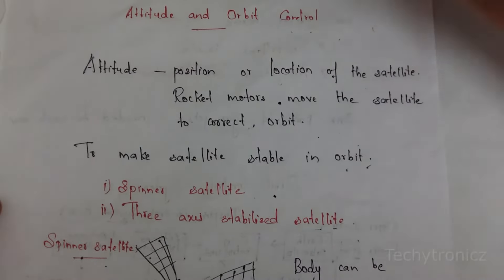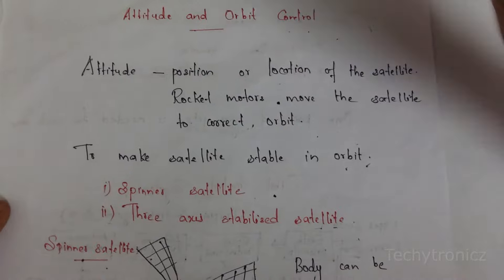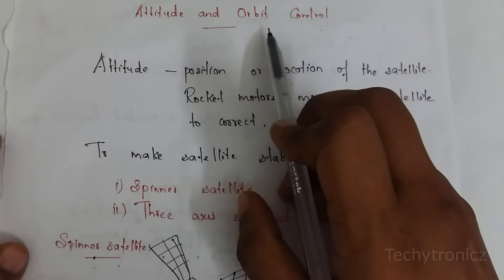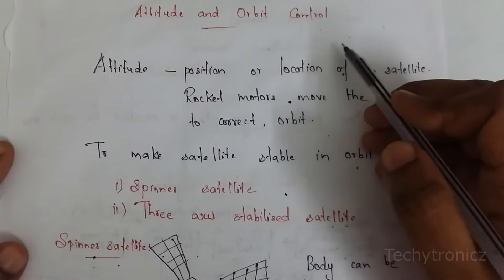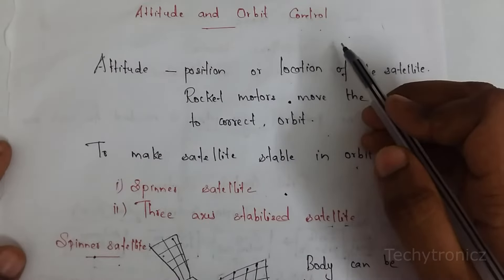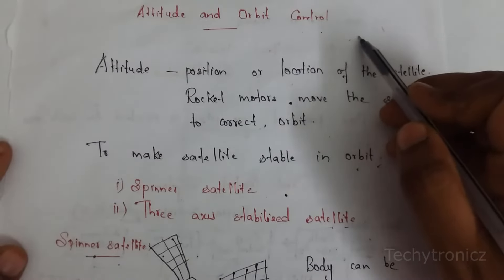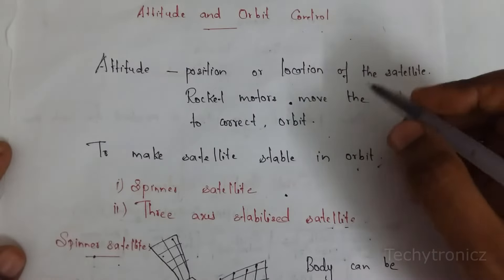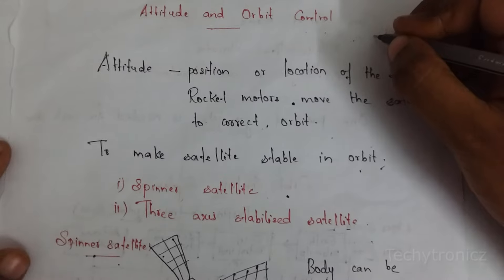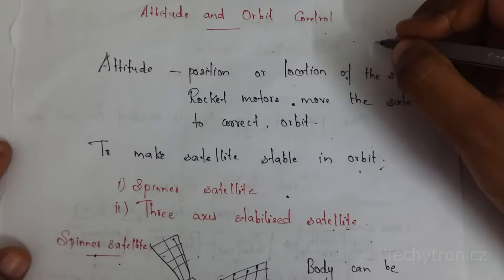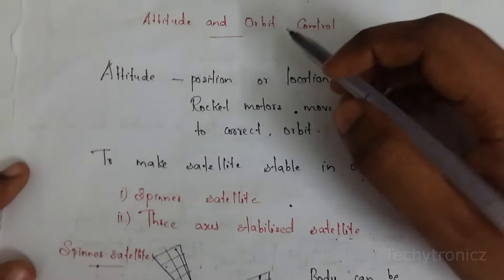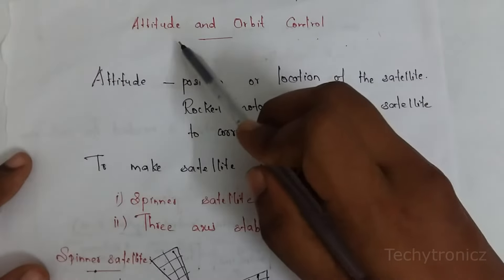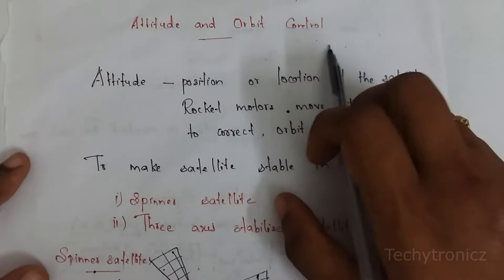Hi students. I am going to talk about attitude and orbit control subsystem. I am going to talk about satellite subsystems: the antenna subsystem, transponder subsystem, telemetry TT&C subsystem, primary subsystems, and array subsystems. So here, we are going to talk about attitude and orbit control subsystems.